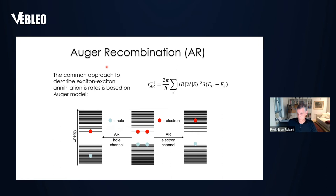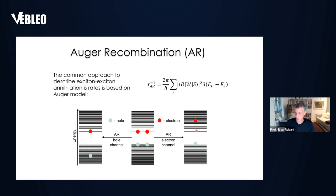To understand exciton-exciton-annihilation, the common picture that people use is called the Auger model. Consider a situation where we've generated two electrons and two holes — the biexcitonic state. The Auger process is simply a process by which one of these carriers recombines with its hole, gives the energy either to the other electron, which gets excited, or in a parallel channel to the hole, where the electron preserves its state and the hole is being excited. Highly excited holes and electrons decay very rapidly by producing heat to the band edge of the material.